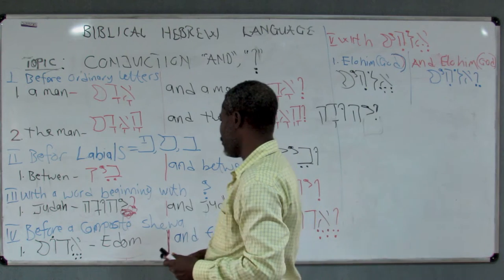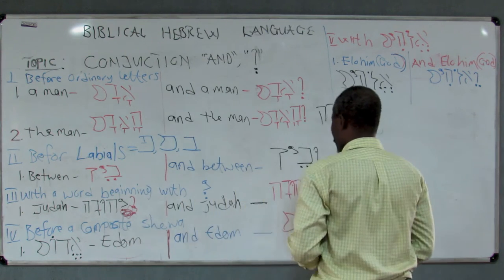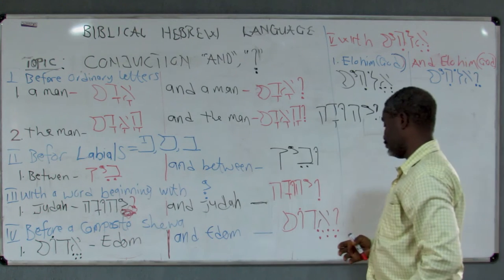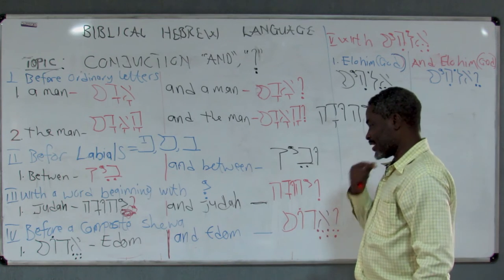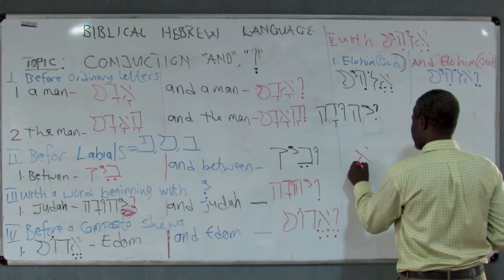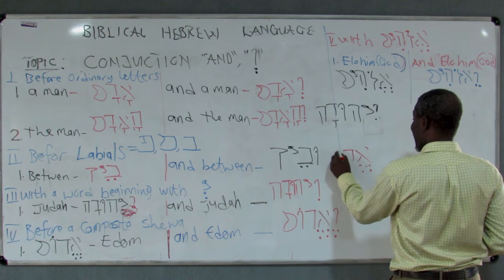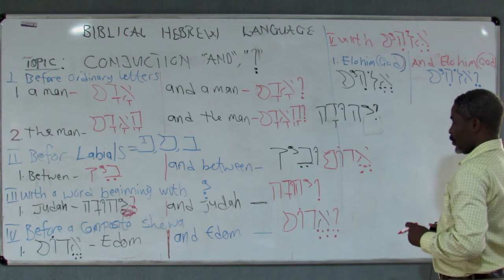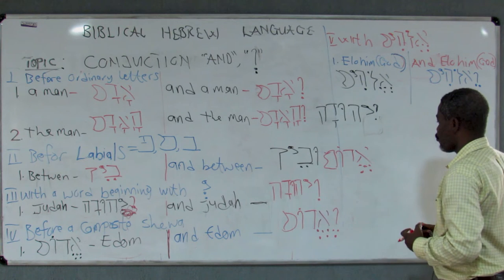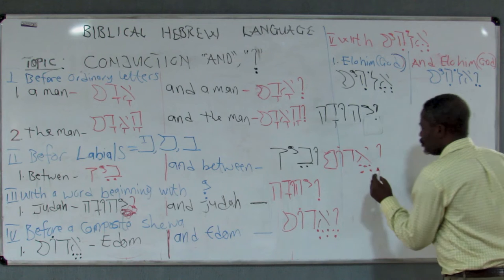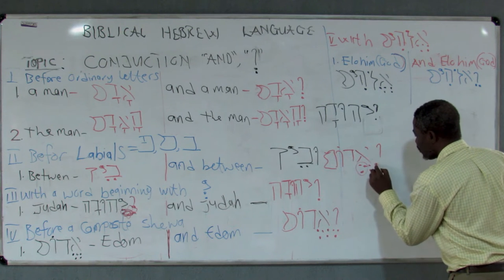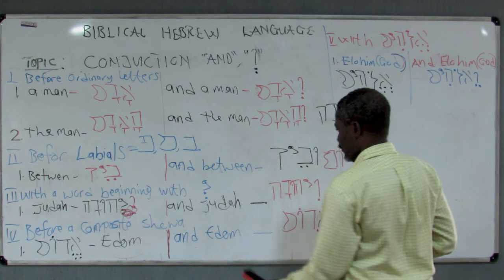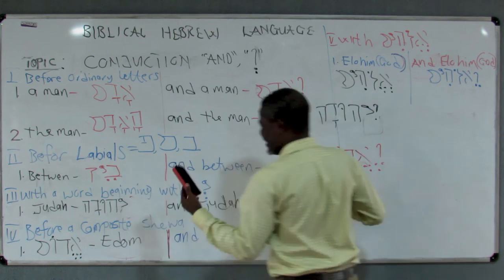Also, before a composite shewa — for example, the word 'Edom,' whose first letter has a composite shewa hatef segol — when you want to say 'and Edom,' you take the corresponding short vowel of that composite shewa and place it under the conjunction. So 'and Edom' becomes 'we-Edom.'